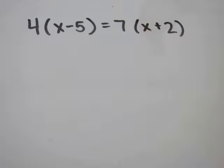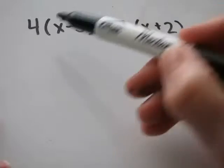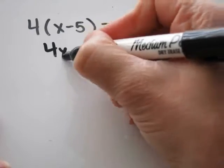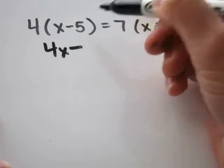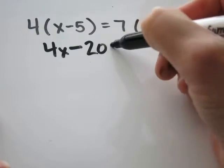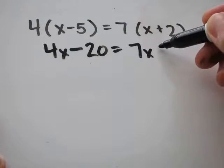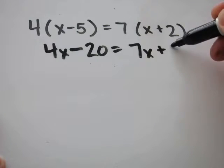My first step will be to get rid of the parentheses. 4 times x, which is 4x, 4 times 5 is 20, 7 times x, which is 7x, 7 times 2 is 14.